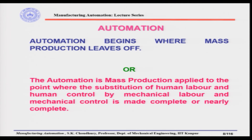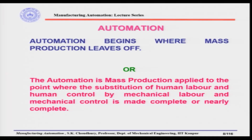Automation is a changeover from mass production and will not come overnight — it will come gradually. Many techniques of mass production will be adopted into automation; we cannot throw out all mechanisms. However, the basic distinction is the substitution of human labor and human control by mechanical labor and mechanical control, either completely or nearly completely.